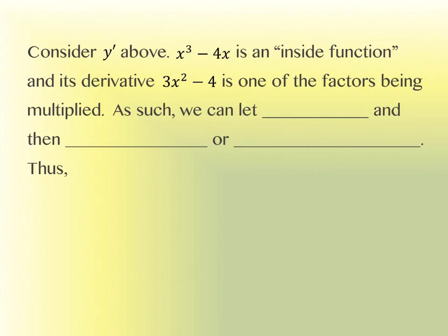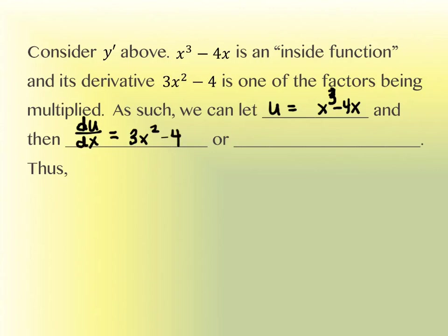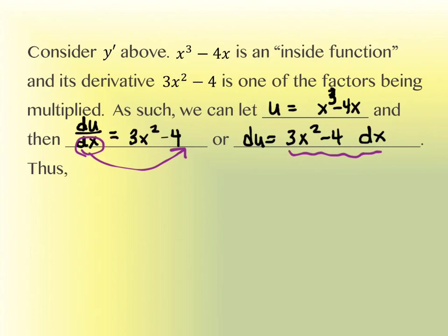So what we're going to do is we're going to let the inside function be what we call u. So u equals x cubed minus 4x. Then we take the derivative. The du/dx — the derivative of u with respect to x — would be 3x squared minus 4. The way we normally write that is with the dx multiplied to the other side, so it ends up looking like du equals 3x squared minus 4 dx.